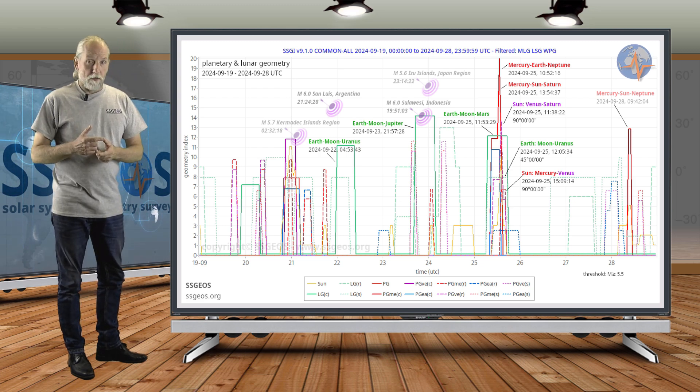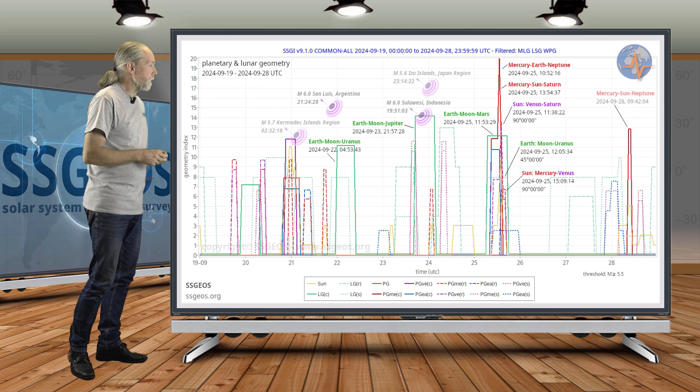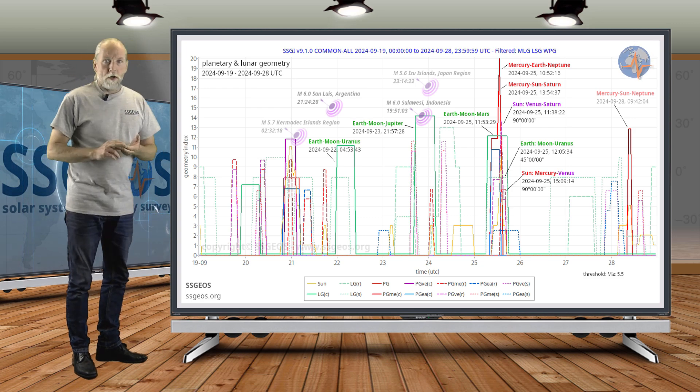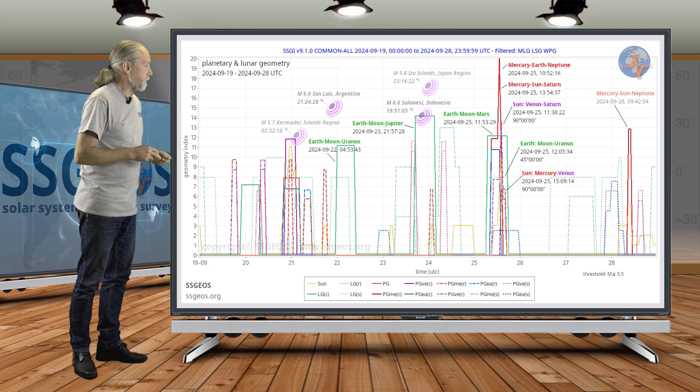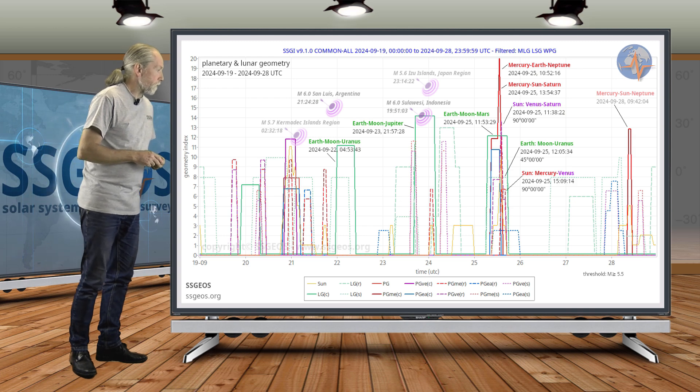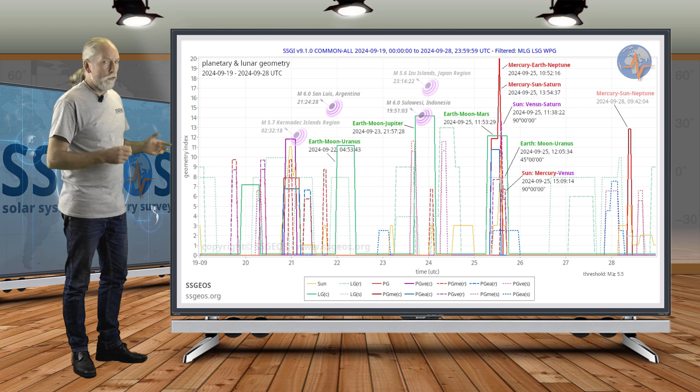We have on top of that two geometries of the Moon: that's Earth-Moon-Mars in a conjunction, and also Earth-Moon-Uranus, a semi-right angle geometry. All this geometry here converges within about four hours, so that's really, really tight.